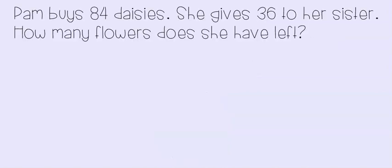Here's our first problem. Pam buys 84 daisies. She gives 36 to her sister. How many flowers does she have left? Now let's take a look and see what we know. It says that Pam buys 84 daisies — that's how many she starts with.